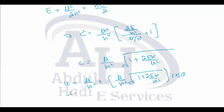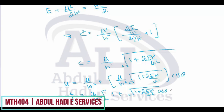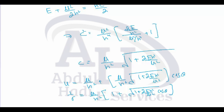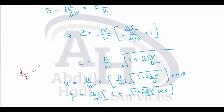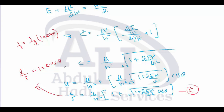Substituting u = 1/r, we get 1/r = (μ/h²)[1 + √(1 + 2Eh²/μ²)·cos(θ)]. The polar equation of a conic is l/r = 1 + e·cos(θ), or equivalently 1/r = (1/l)(1 + e·cos(θ)). Comparing equations C and D: l = h²/μ and e = √(1 + 2Eh²/μ²). The orbit is an ellipse if E < 0, a parabola if E = 0, and a hyperbola if E > 0.